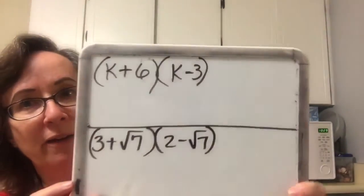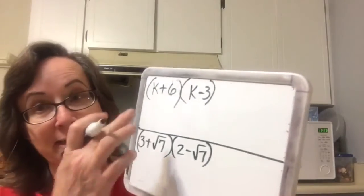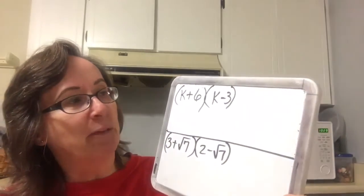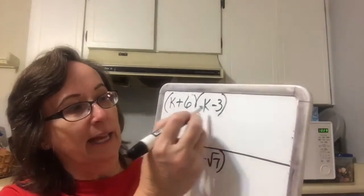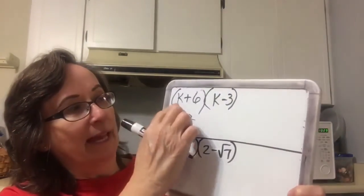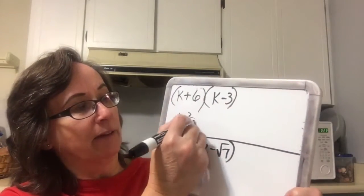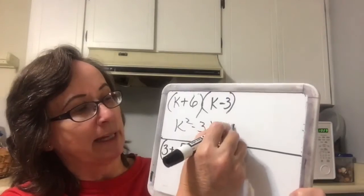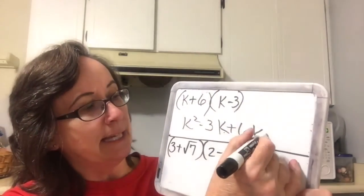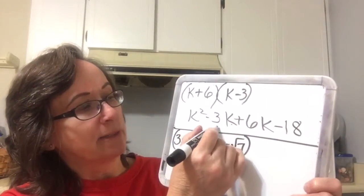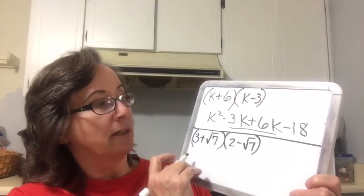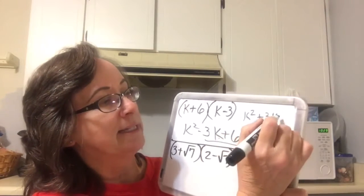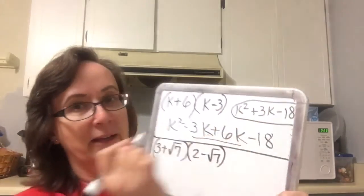With more multiplication, we are now FOILing two binomials. This first example has no radicals but shows you what FOILing looks like. When we FOIL, we do the first — k times k is k squared — then the outside is negative 3k, the inside is positive 6k, and the last is negative 18. The inside and outside terms add together to give me k squared plus 3k minus 18.